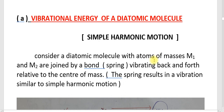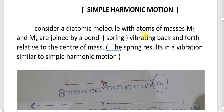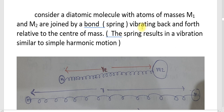We are going to discuss the vibrational energy of a diatomic molecule in a simple harmonic oscillator and in an anharmonic oscillator. First, we discuss the vibrational energy of a diatomic molecule in simple harmonic motion. Consider a diatomic molecule with atoms of masses M1 and M2 joined by a bond, where the bond is considered as a spring vibrating back and forth relative to the center of mass.